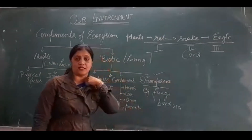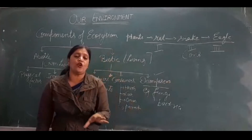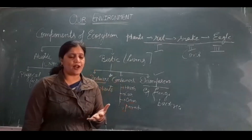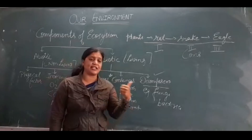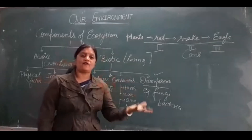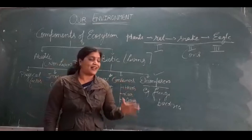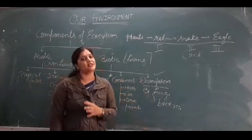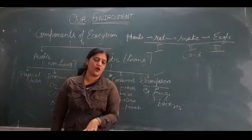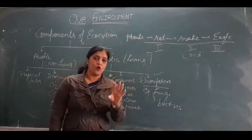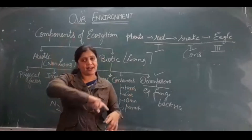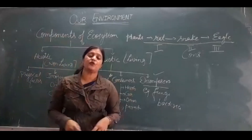One important question: what are the roles of decomposers in our environment? First, they are a cleaning agent — they help to clean the environment by decomposing dead plants and animals. Second, after decomposing, it converts into humus, which helps to increase soil fertility. Third, it acts as a nutrient pool, returning all nutrients back to the soil, which are again used by living organisms — thus continuing the nutrient cycle.